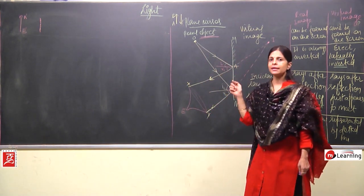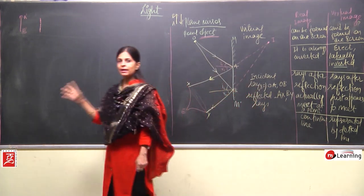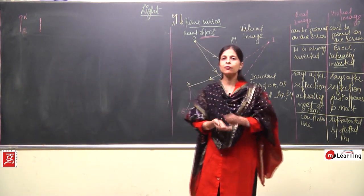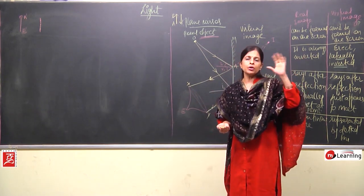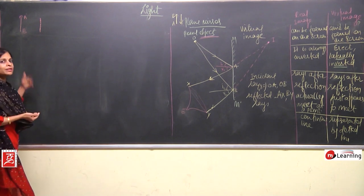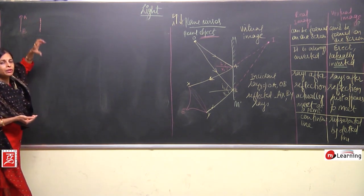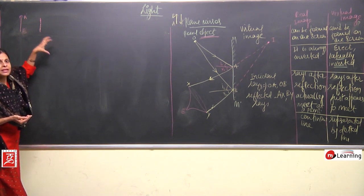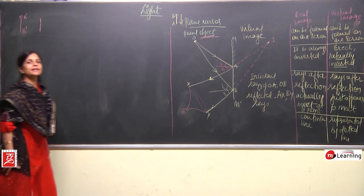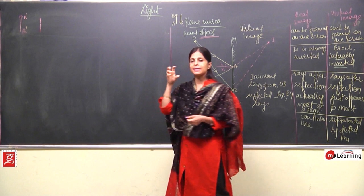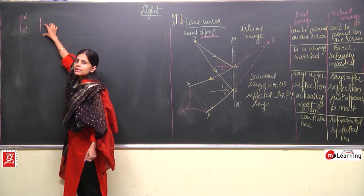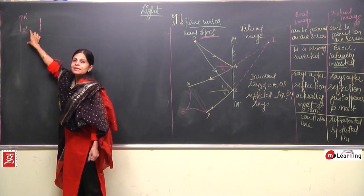To recap: first, we need to take the example of an extended object because practically we do not encounter very small, minute objects. Second, an extended object is made up of many, many point objects. Similarly, the extended image of any object is formed when the images of many point objects are joined together.